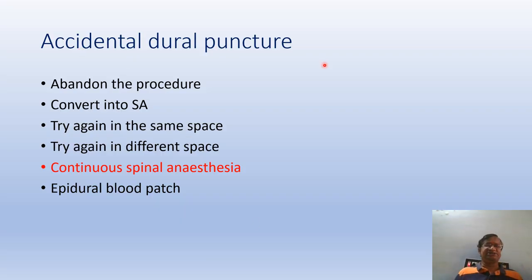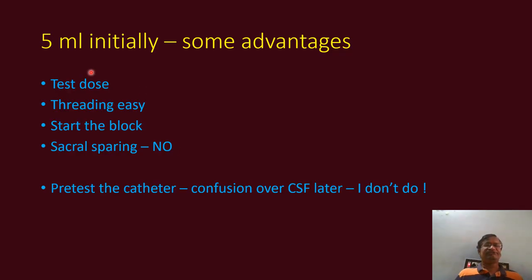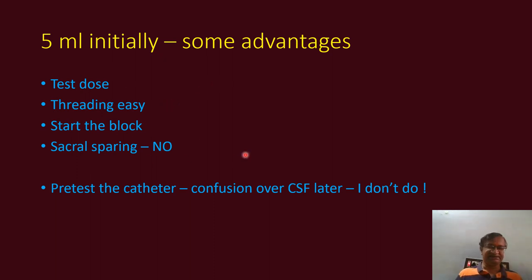In the event of accidental dural puncture, options include: abandon the procedure, perform continuous spinal anesthesia — which is what I do — convert to a single shot, try again in the same space, try again in a different space, or use an epidural blood patch. I prefer continuous spinal anesthesia. Injecting 5 ml initially has some advantages: test dose, easier threading to establish the block, and sacral sparing.